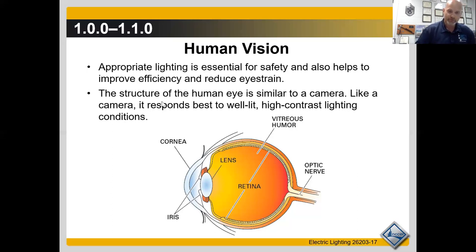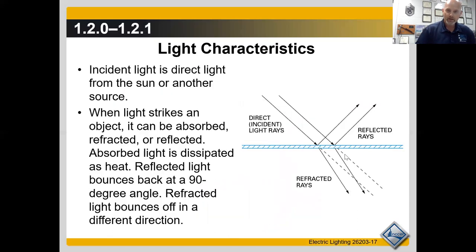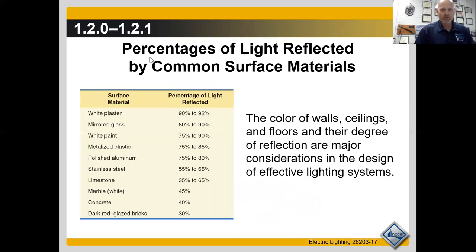Looking at figure three: direct incident light rays. If it's reflected, it bounces off. If it's absorbed, it goes straight in. If it's refracted, it partially bends through. Table one shows percentages of light reflected by common surfaces. The color of walls, ceilings, and floors, and their degree of reflection are major considerations in the design of effective lighting systems. White plaster reflects 90 to 92 percent.